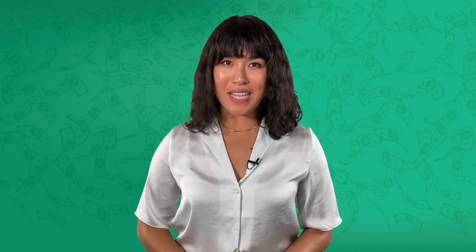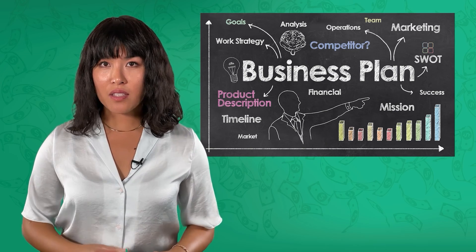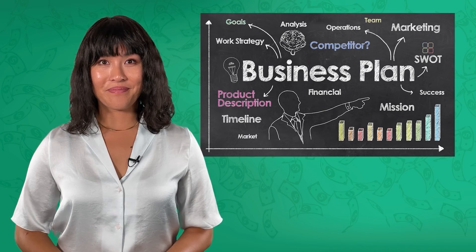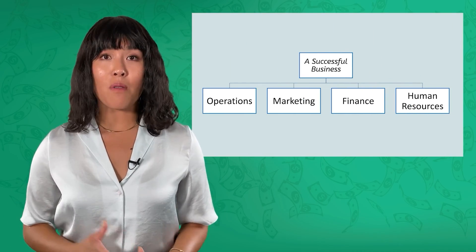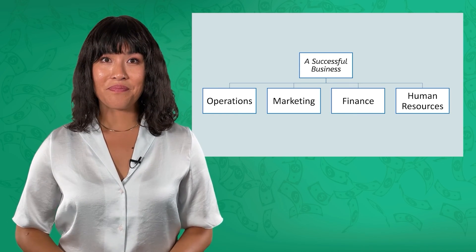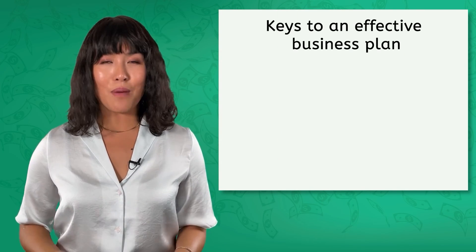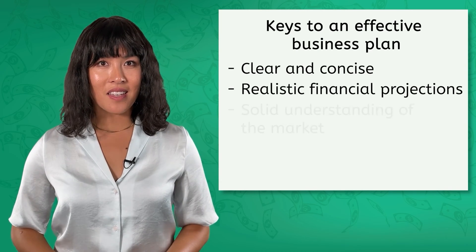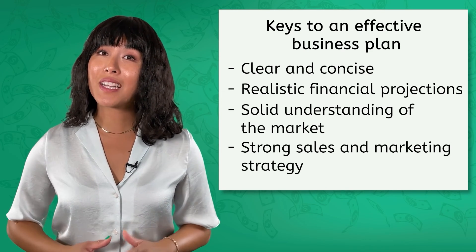Let's take a moment to recap. We learned that a business plan is a written document that outlines the goals, strategies, and operations of a business. A business plan should cover all aspects of the business, from operations, to finance, to human resources, to marketing. And in order for these business plans to be effective, they should be clear and concise, include realistic financial projections, have a solid understanding of the market, and have a strong sales and marketing strategy.